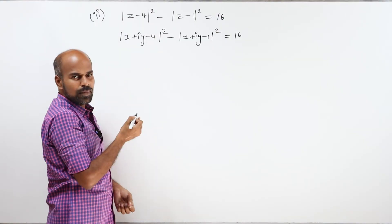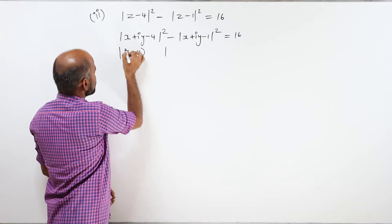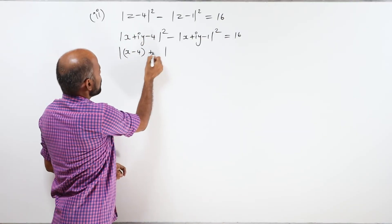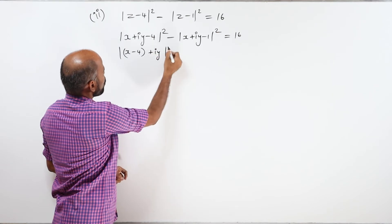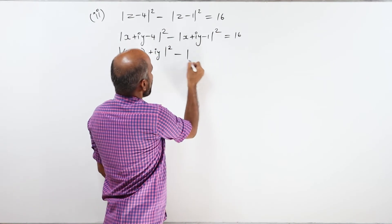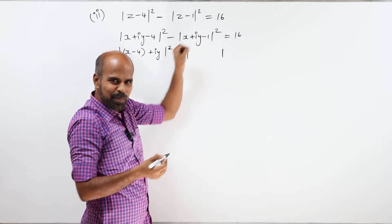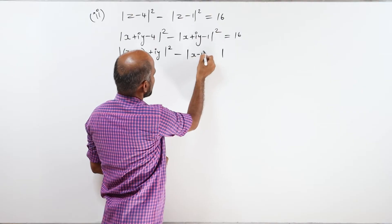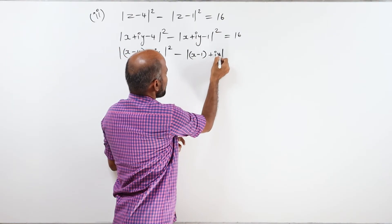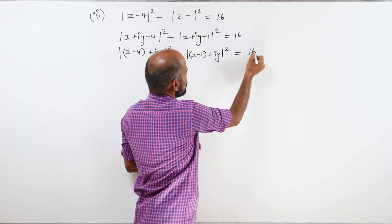Let us arrange the terms. The real term inside the first modulus is x minus 4, with i term plus iy. Inside the second modulus, the real term is x minus 1, with i term plus iy. The whole square equals 16.